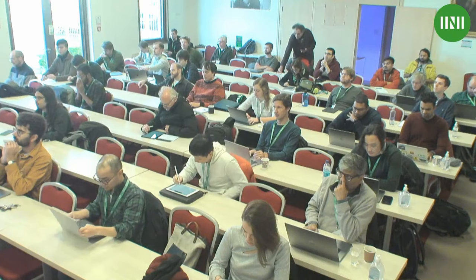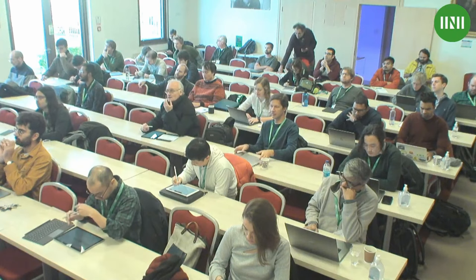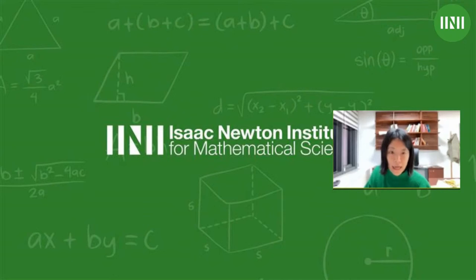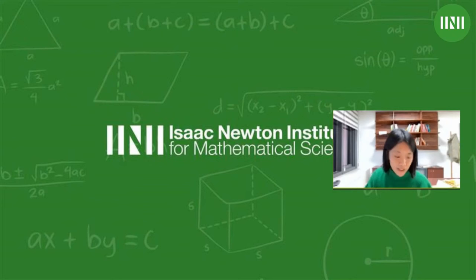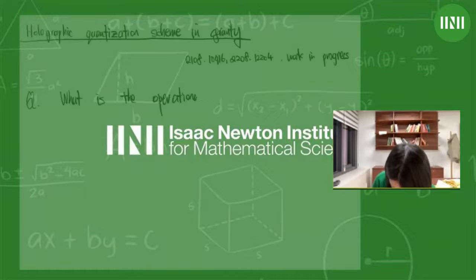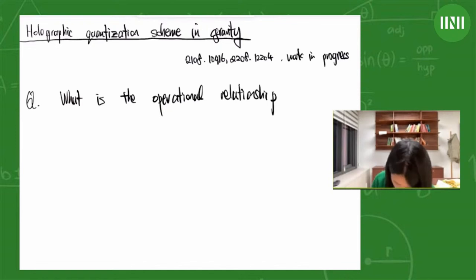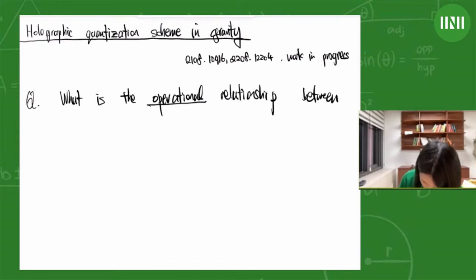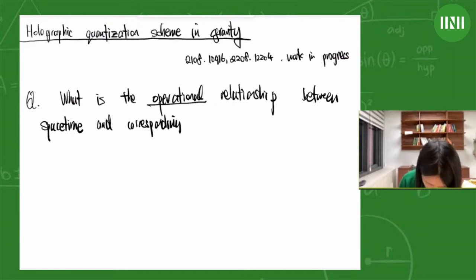When we consider the confluence of quantum information and quantum gravity in the context of AdS/CFT, and the fact that we've learned that gravity essentially amounts to some representation of the information content of a quantum theory, I think an important and useful question is: what is the operational relationship between spacetime and the corresponding quantum degrees of freedom in gravity viewed as an effective theory?